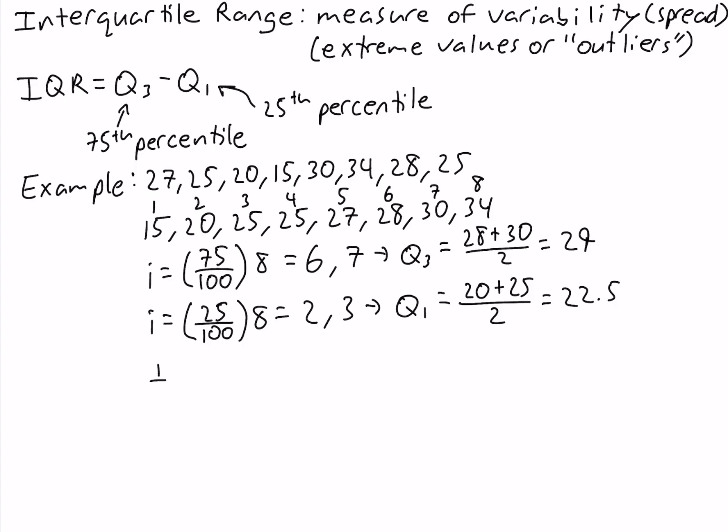So our interquartile range equals 29 minus 22.5, which equals 6.5.